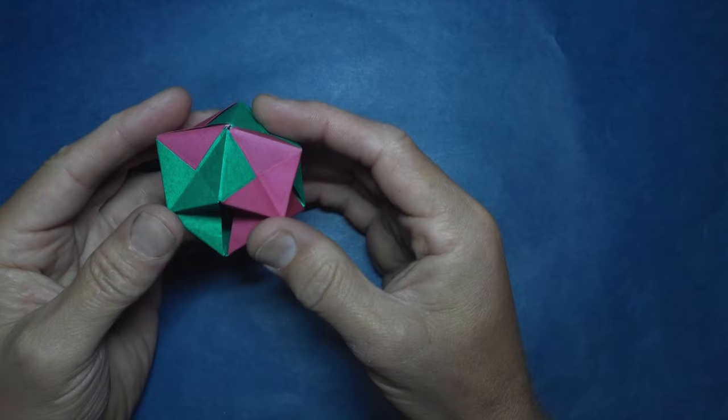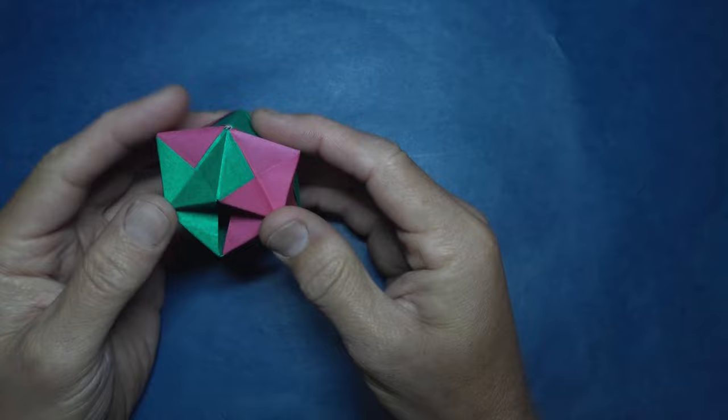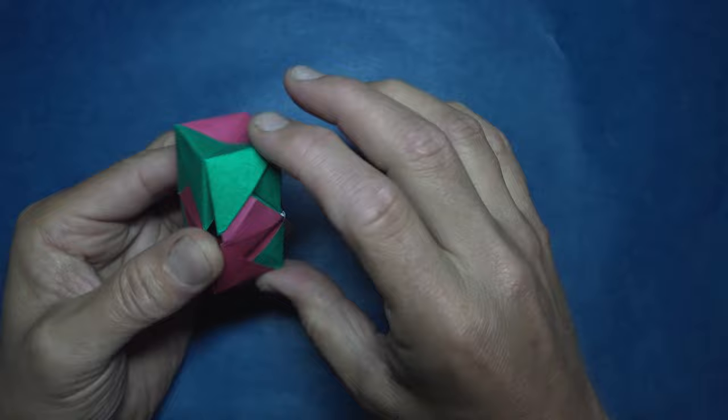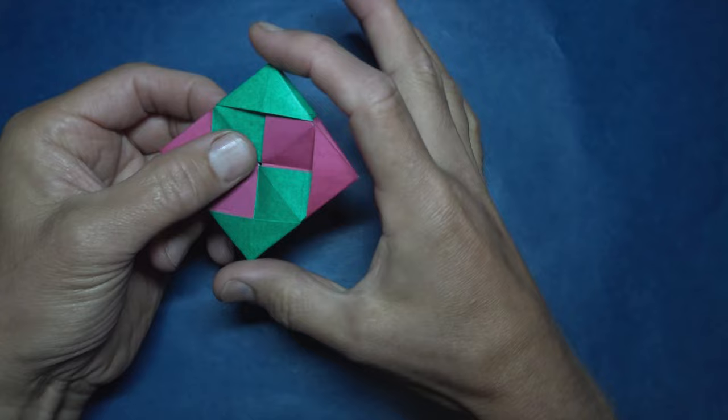It's a stellated octahedron that collapses into a square, and then you press the sides and it becomes a 1x1x2 box, and then you press the other sides and it goes back and forth like this. And then it flattens, and when you press these, it goes back into the stellated octahedron.